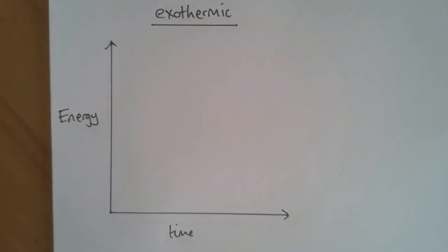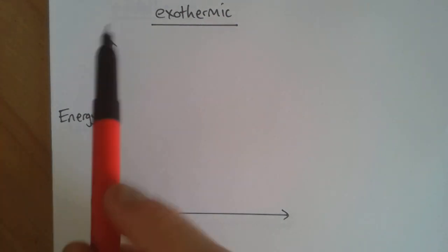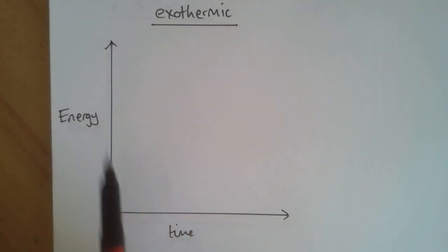A reaction profile shows how the energy of a chemical reaction changes over time. There are two axes. The y-axis is energy and the x-axis is time.